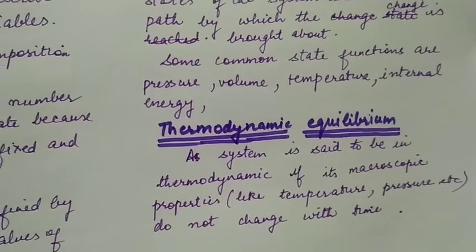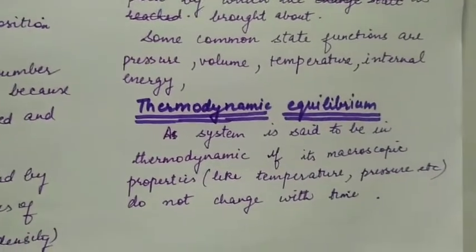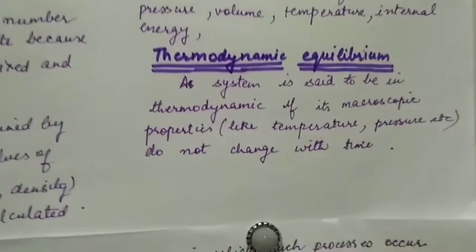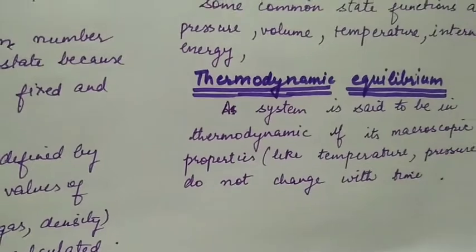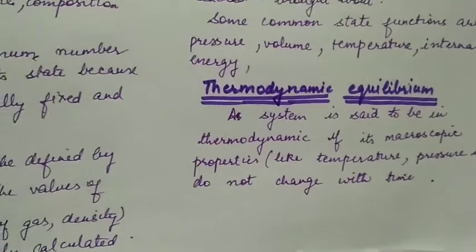Thermodynamic equilibrium. A system sometimes reaches a state where its macroscopic properties do not change with time - then we say that it has reached equilibrium, and this type of equilibrium is called thermodynamic equilibrium.